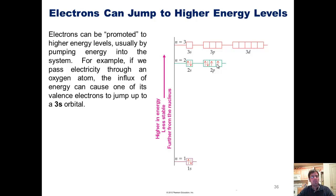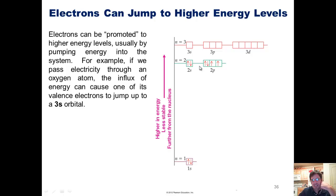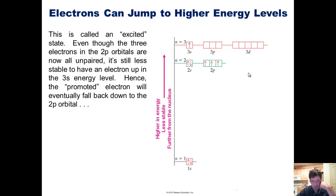Now electrons can be promoted to higher energy levels, usually by pumping energy into the system. For example, if we pass electricity through an oxygen atom, the influx of energy can cause one of its valence electrons to jump up to a 3s orbital like this. You can see how the electron went from its 2p orbital up to the 3s orbital.